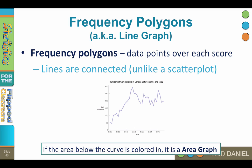Frequency polygons are often used to show change over time, such as gun murders in Canada between 1961 and 1991. If the area below the graph is filled in with color or shading, it is called an area graph.